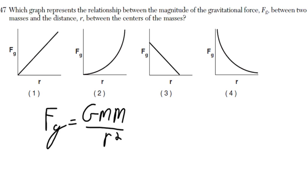So as we look at this, R is in the denominator, which indicates that there's some type of inverse relationship here. As R goes up, the force of gravity will go down, which eliminates choices one and two.